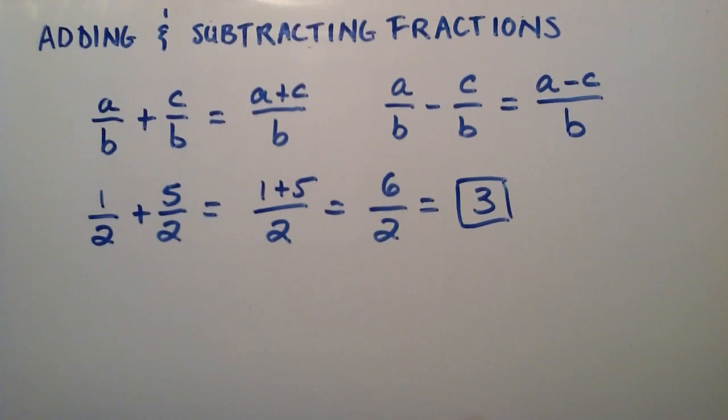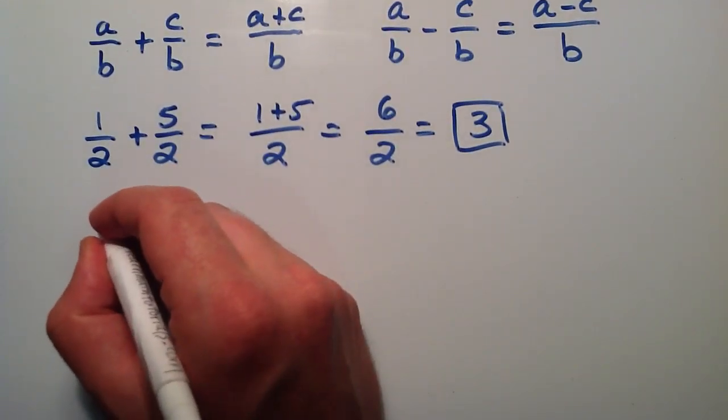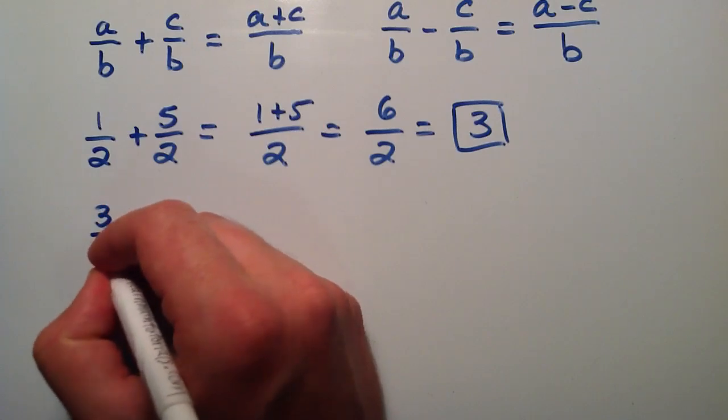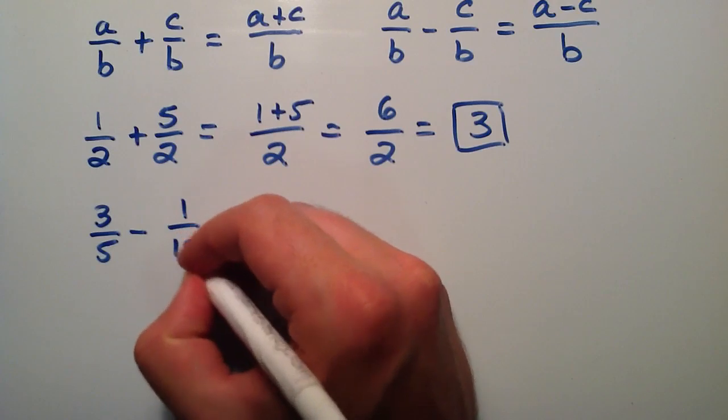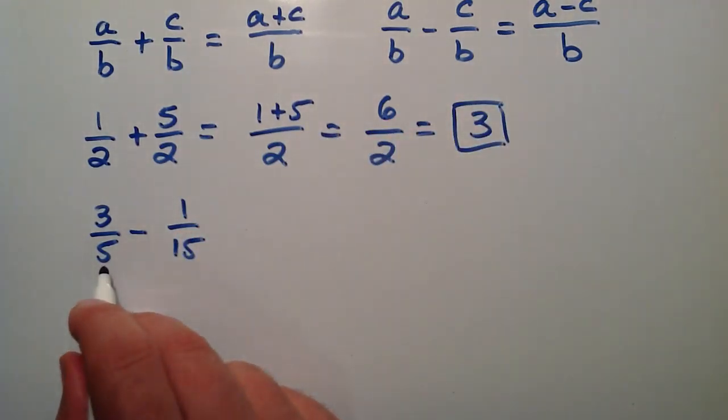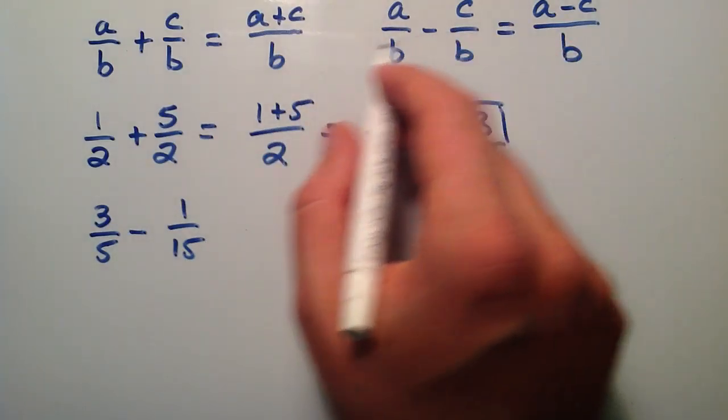That was pretty simple, let's do a little bit harder one for the subtraction. Let's say that we have three fifths, and we want to subtract one fifteenth. Now in this case, five and fifteen aren't the same, so we can't just immediately apply this rule here.